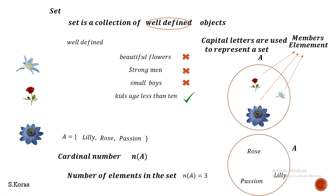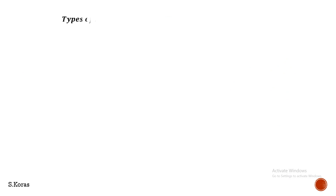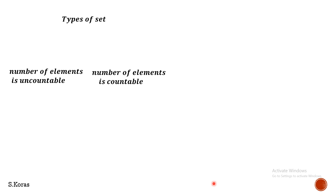Now let's discuss the types of sets. The number of elements inside a set may be countable or uncountable. If the number of elements is uncountable, the set is called an infinite set. If the number of elements is countable, it is called a finite set.